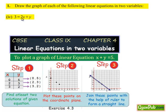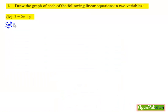Coming to the 4th part, 3 equals 2x plus y. Moving on to the solution, the given equation is 3 equals 2x plus y, which is a linear equation in two variables x and y. We need to draw the graph of this equation.